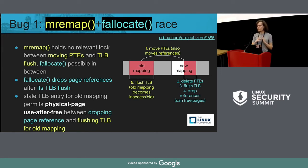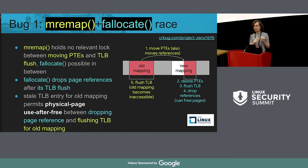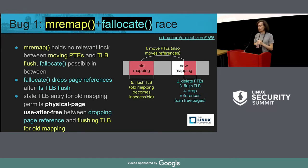When you use fallocate, it iterates through all virtual memory areas across different processes that include this file range and tries to remove the pages — looking for non-zero page table entries, deleting them, flushing the TLB range, and dropping references on the pages. The race was that mremap didn't hold any locks between the time it moved page table entries from the old address to the new address and when it did the TLB flush at the old address. So mremap moves the PTEs to the new address, but stale TLB entries remain for the old virtual address. Then fallocate deletes the PTEs at the new address, flushes the TLB for the new address range (not the old), drops references on the pages — leaving stale TLB entries pointing to pages already on the free list.